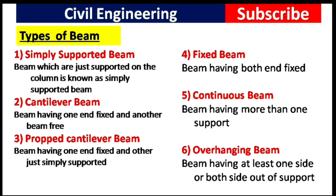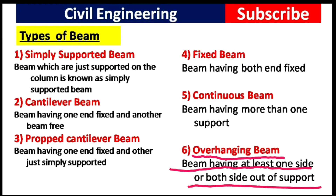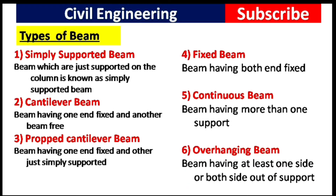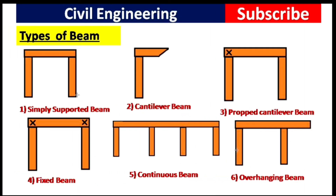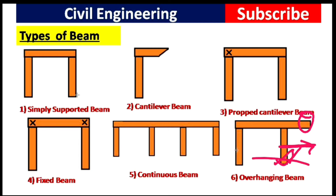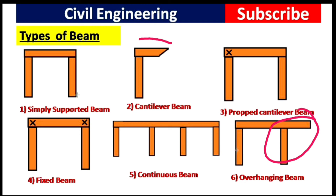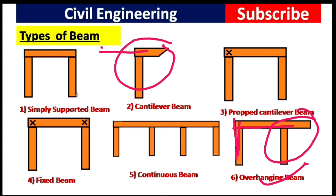The last type is the overhanging beam. A beam having at least one side extended out beyond the support is known as an overhanging beam. As you can see in this picture, one end is extended from the nearest support. Note that this part looks like a cantilever beam, but because it extends to the next support, it is called an overhanging beam.